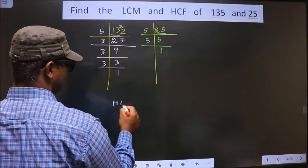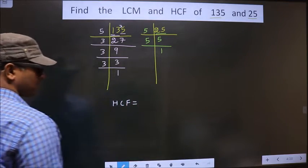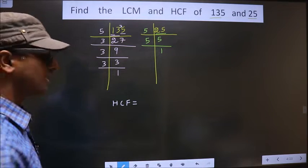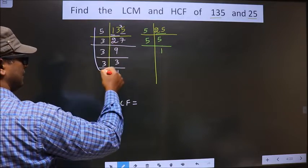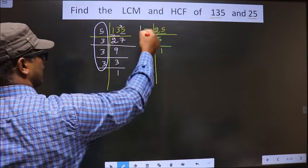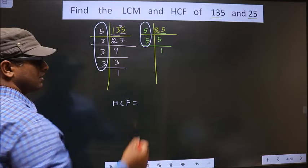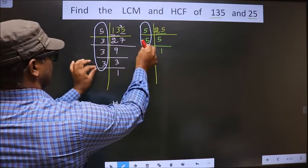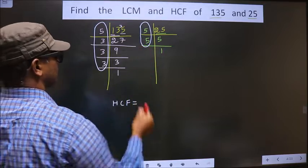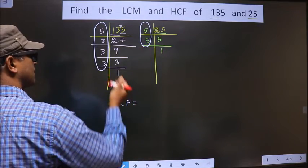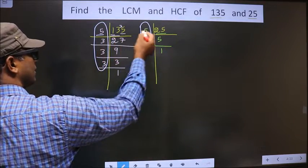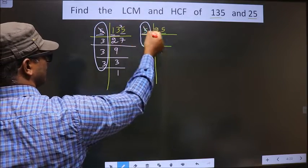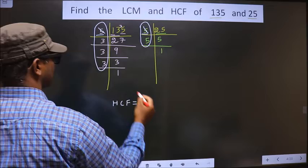Now our HCF is, HCF is the product of numbers that are present here and also here. We should find the numbers that are present in these two places. Let us find, starting with the number 5. Do we have 5 here? Yes. So, you cut 5 right here.